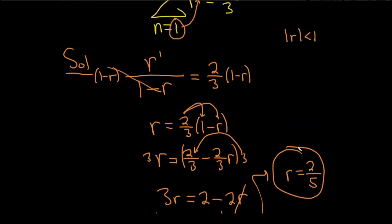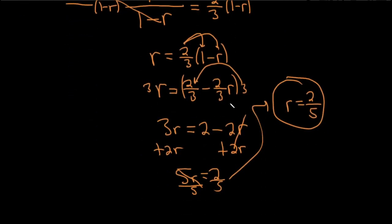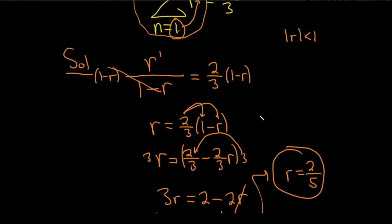So not too difficult. Basically, what you want to do is just use the formula for a convergent geometric series. So again, take this number, plug it in, divide by 1 minus r, and then set it equal to the answer, which is 2 thirds, and then just solve for r, and you should be good. I hope this video has been helpful. Good luck.